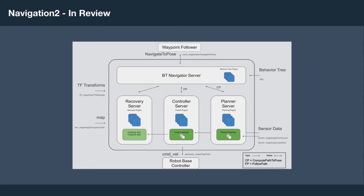Looking at the block diagram for the Navigation 2 stack: at the top we have a waypoint follower which sends requests to the BT Navigator server. The BT Navigator server loads a BehaviorTree XML file at runtime, parses it, and identifies all custom BehaviorTree node plugins to load. As you execute your navigation logic, you might call recovery behaviors, ask your local trajectory planner for control efforts, or talk to your path planner for a plan through space. Each BehaviorTree node calls different servers to make full use of multi-core processors. The controller server produces command velocity sent to the robot base. TF transformations provide localization information, a map is available to the full system, and sensor processing pipelines occur in the Costmap modules.